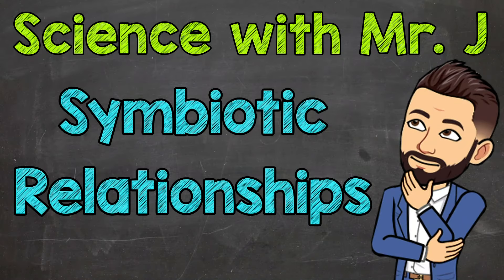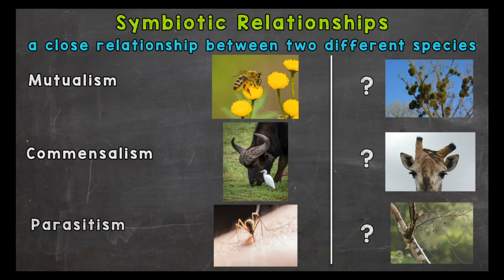Welcome to Science with Mr. J. In this video I'm going to cover symbiotic relationships. Symbiotic relationships are close long-term relationships between two different species. Symbiosis comes from the Greek words that mean living together, so that makes sense.